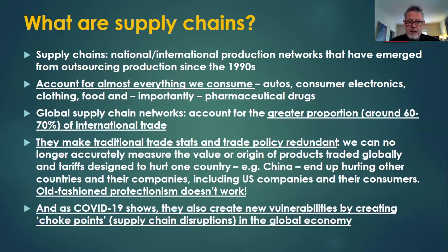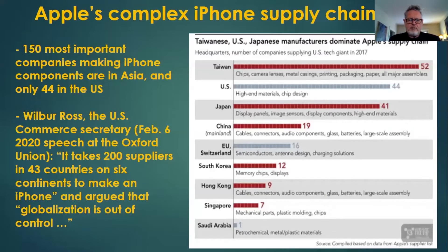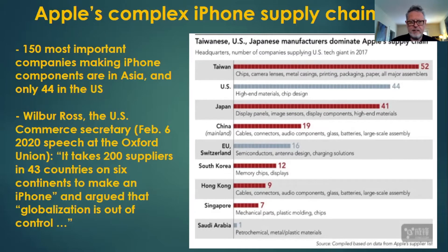And as COVID-19 shows, they also create new vulnerabilities by creating choke points in the form of supply chain disruptions in the global economy. What is the supply chain in real terms? Take a look at Apple. 150 to 200 companies are involved in making components for the iPhone. 150 of those are in Asia, only 44 in the United States. Wilbur Ross argued that globalization is out of control, saying it takes 200 suppliers in 43 countries on six continents to make an iPhone. His complaint reveals a real phenomenon — the incredible dispersion and fragmentation of production across borders.